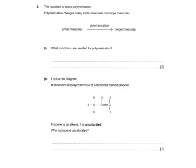Finally, a couple of past paper questions. This question's about polymerization. Polymerization changes many small molecules into large molecules. What conditions are needed for polymerization? There are two marks going for this, because there are two conditions. One of them is high pressure, and the second one is a catalyst.